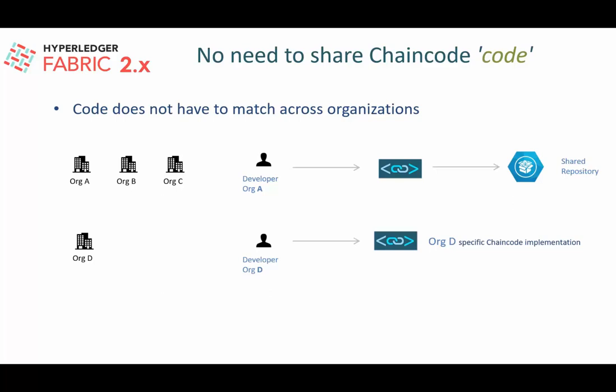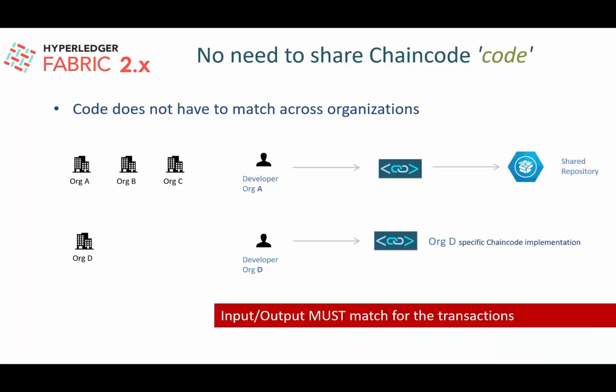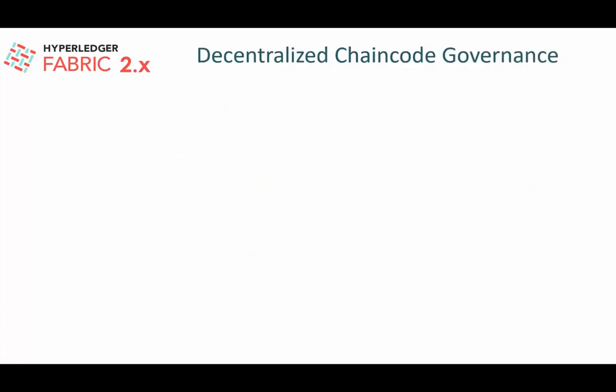Organization D's developer can implement a chaincode that meets their specific requirements — for example, certain query functions needed for business processing, or specific transaction processing needs. However, the behavior of the chaincode must be consistent across the network. Irrespective of how or by whom the chaincode is developed, it must have the same specifications: the input/output must match for transactions, and the read/write sets generated during execution within the endorsing peers must match for the endorsement to be successful.